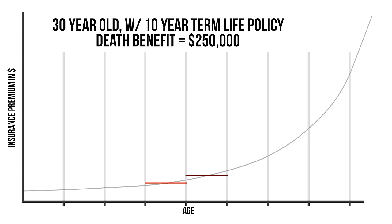They would still have the $250,000 coverage amount. And in the third 10-year term, the premiums might jump up again to something like $300 per month. Another option available is a 20-year term life insurance policy.